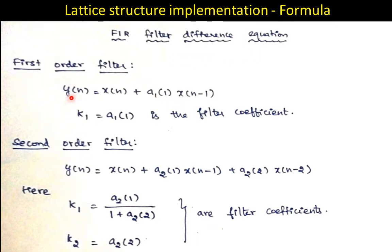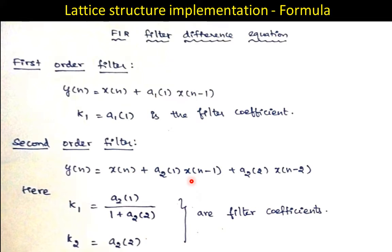For a first order filter difference equation, the output y(n) is equal to x(n) plus a1(1) into x(n-1). In case of a second order filter, the output y(n) is equal to x(n) plus a2(1) into x(n-1) plus a2(2) into x(n-2).